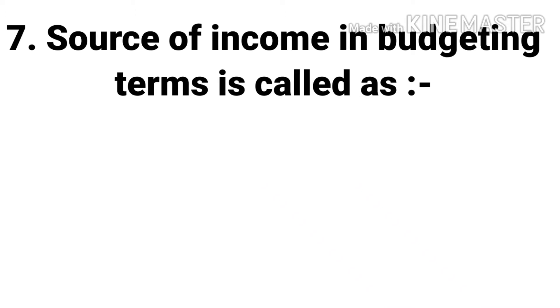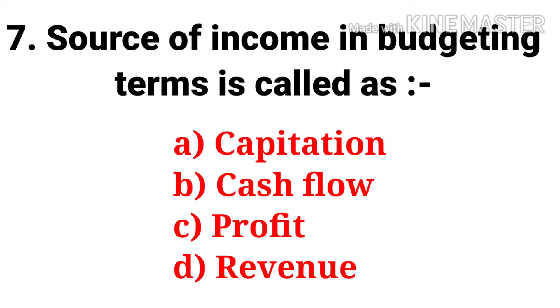Question 7: Source of income in budgeting terms is called as — the options are: capitation, cash flow, profit, revenue. The answer is revenue.